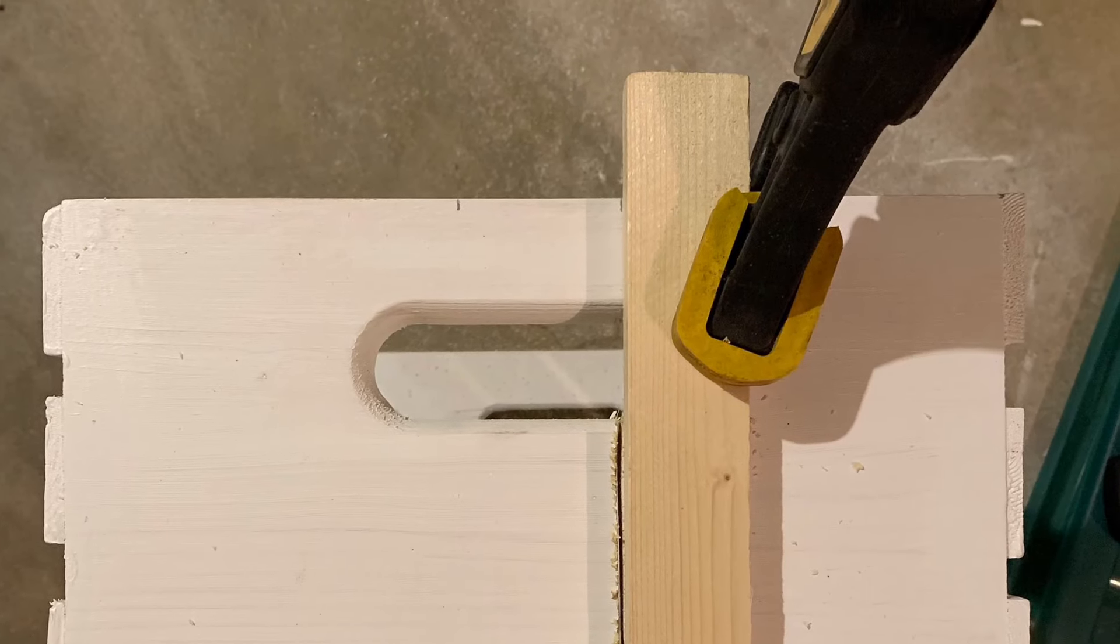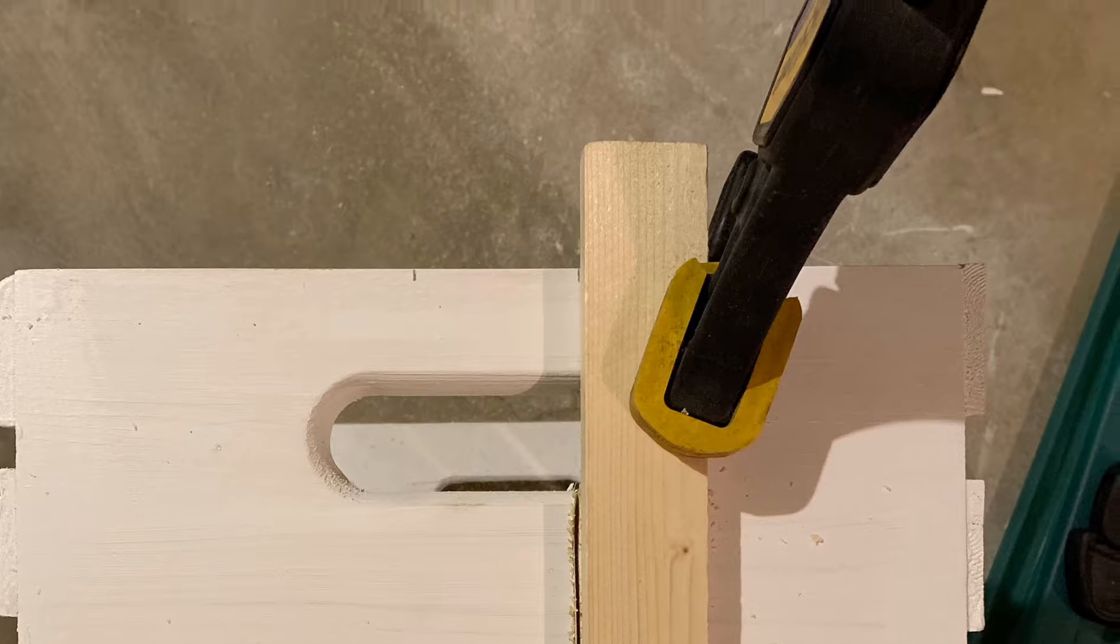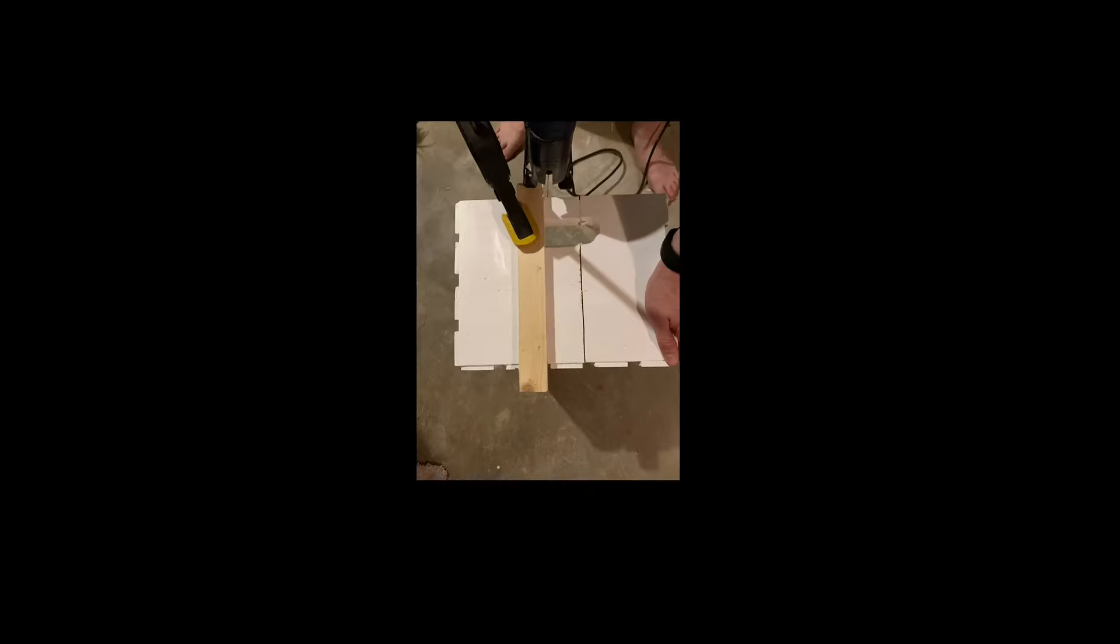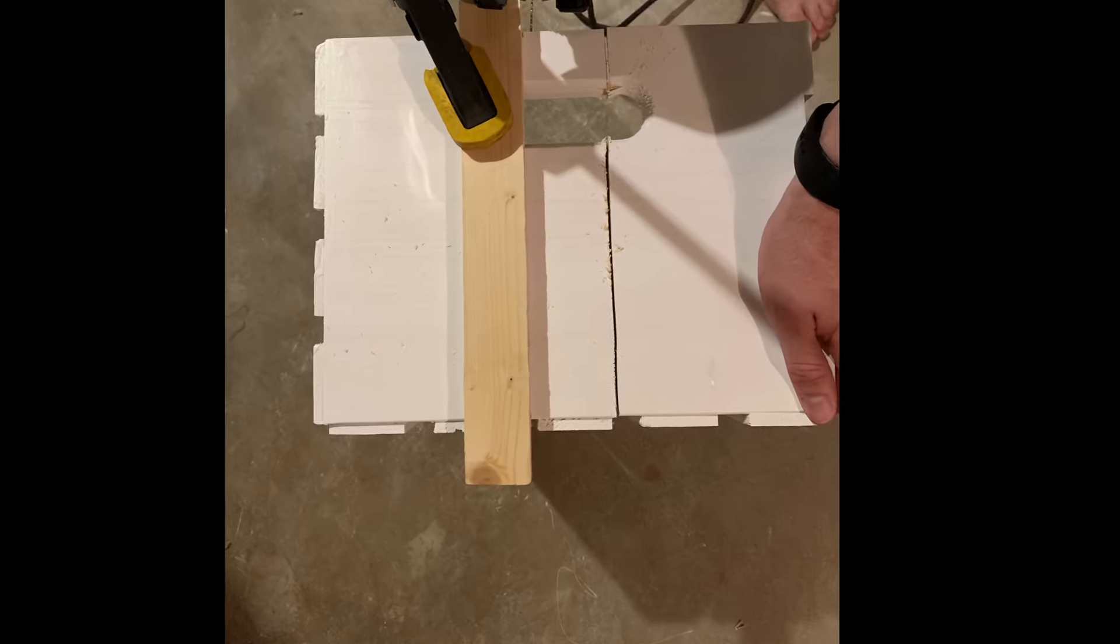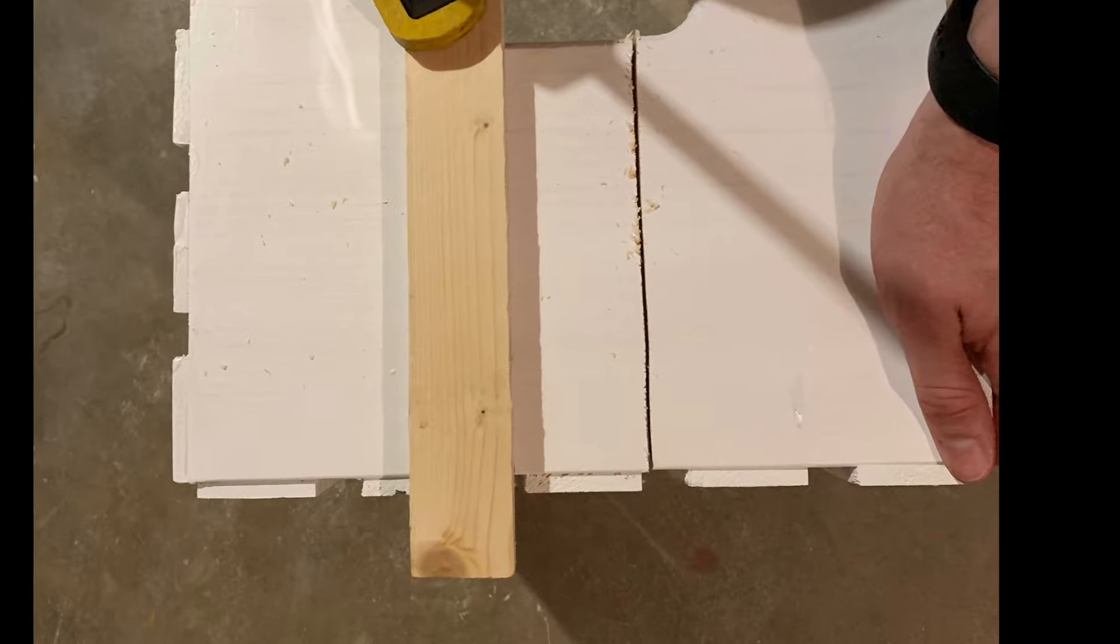My husband clamped a 1x2 to the crate in order to get a straight cut using a jigsaw. We ended up making two cuts on the crate, one on each side of the middle slat in the bottom.